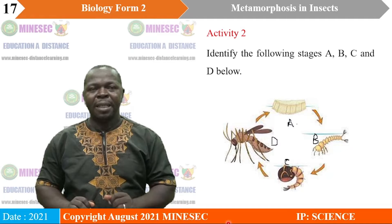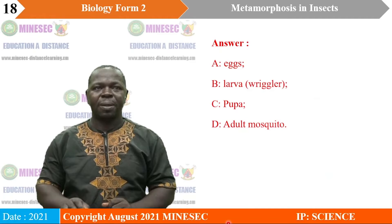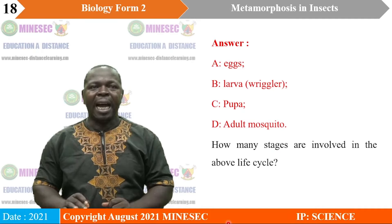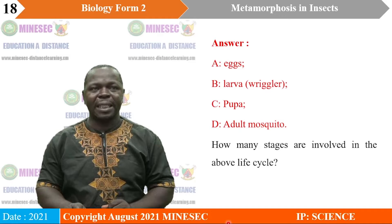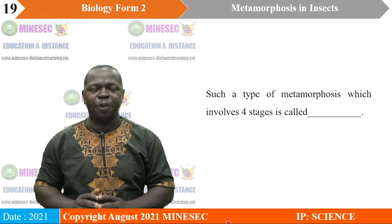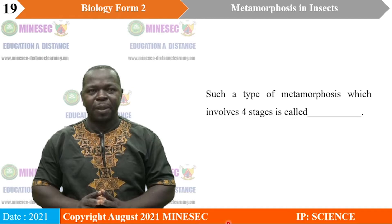How many stages are involved in the above life cycle? There are four stages: the egg, the larva, the pupa, and the adult mosquito stages. Such a type of metamorphosis which involves four stages is called complete metamorphosis. So complete metamorphosis involves four stages.